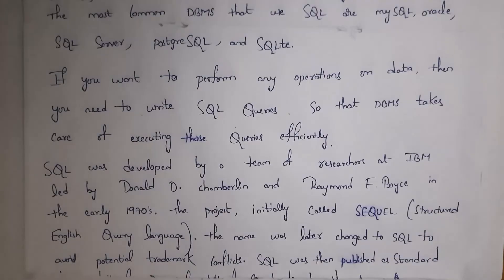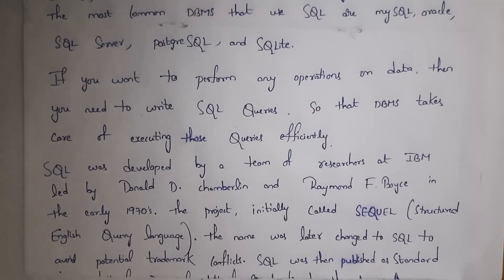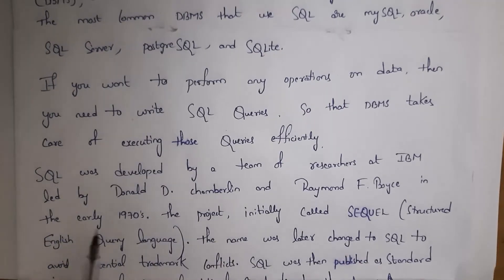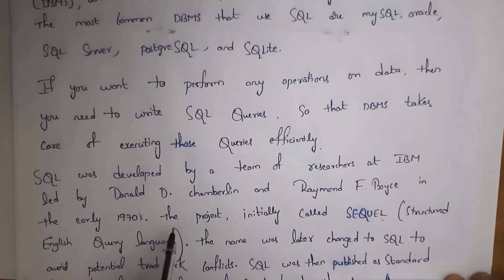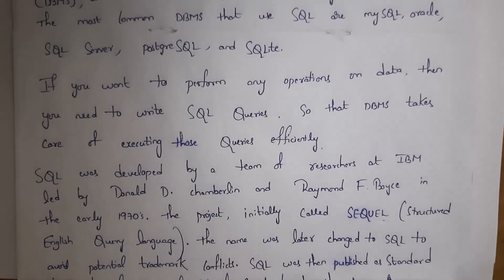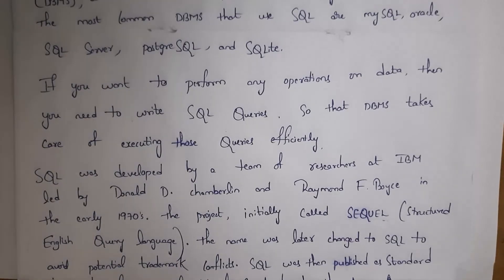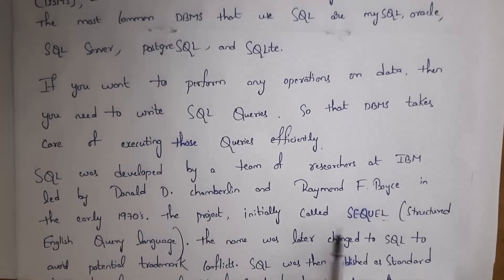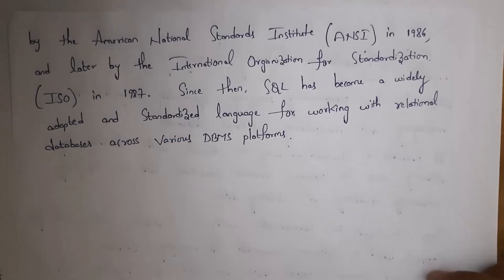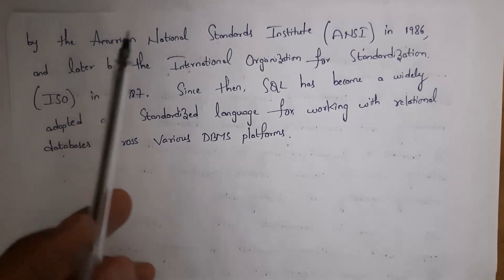SQL was developed by a team of researchers at IBM led by Donald Chamberlin and Raymond F. Boyce in the early 1970s. The project was initially called SEQUEL — Structured English Query Language — but due to trademark conflicts, similar to copyright conflicts where other companies had already taken that name, they changed the name to SQL.